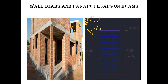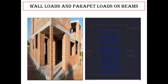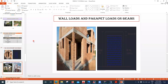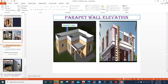For every one meter of beam length, we calculate how much kilonewton of load is coming. We do manual calculations and then apply the same load on the brickwork wherever required. Similarly, parapet walls also transfer load to the beam and must be calculated and applied the same way.